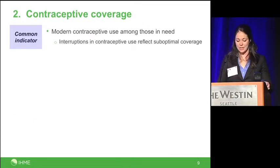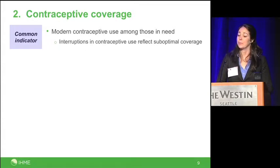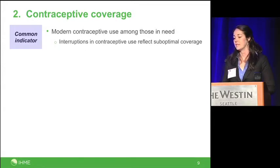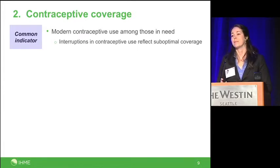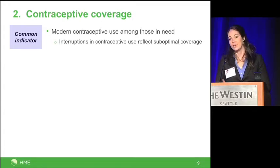The next indicator is contraceptive prevalence. One of the most common indicators is modern contraceptive use among women in need — typically married or partnered women who are fecund but not pregnant or trying to become pregnant. Modern contraceptive prevalence refers to current use and masks potentially important variation in consistency of use. For example, 50% prevalence could mean that 50% of women use contraception consistently, or it could mean that 75% of women have some exposure but their use is inconsistent, such that only 50% are covered at the time of survey.